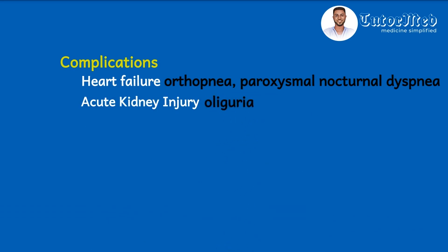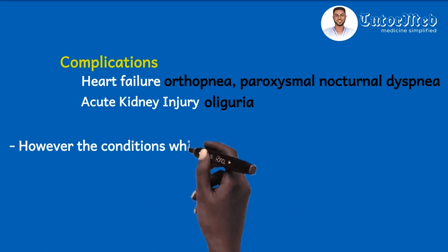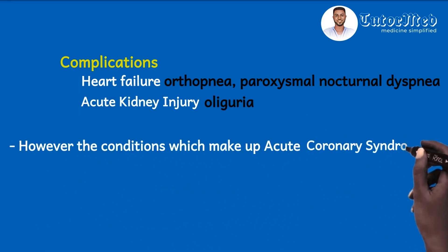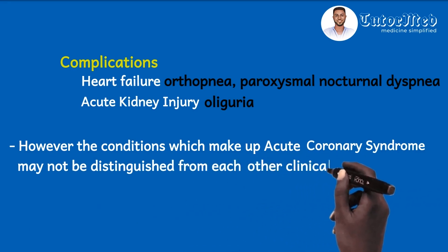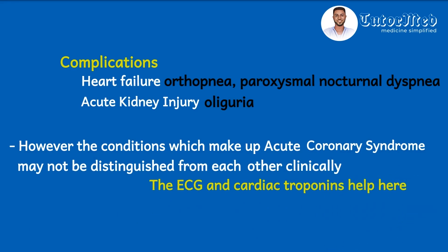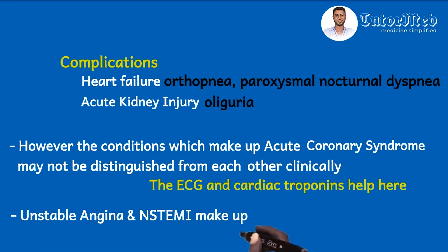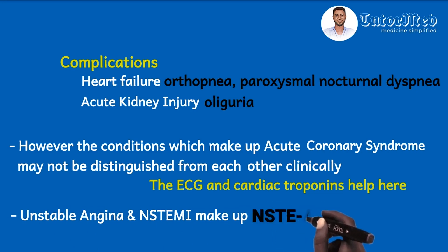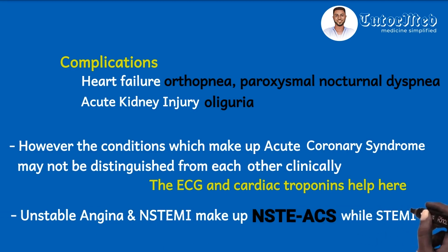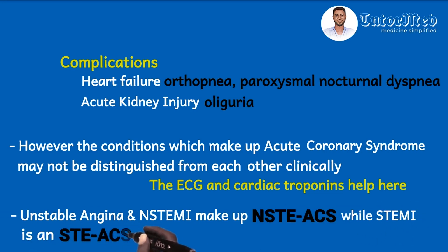The conditions which make up acute coronary syndrome — unstable angina, NSTEMI, and STEMI — may not be distinguished from each other clinically. Here the ECG and cardiac troponins may help. Based on the ECG, unstable angina and NSTEMI make up the non-ST elevation acute coronary syndrome, while STEMI is the ST elevation acute coronary syndrome.